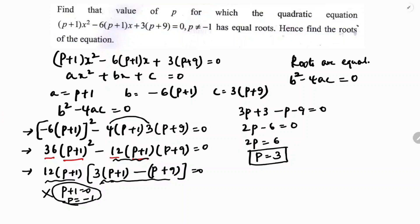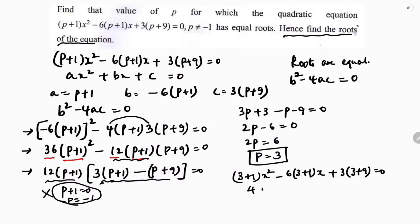At the end the question also asks to find the roots of the equation. Substituting p = 3: (3+1)x² - 6(3+1)x + 3(3+9) = 0, giving 4x² - 24x + 3(12) = 0, so 4x² - 24x + 36 = 0.